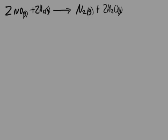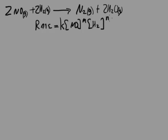Part A says to determine the order for each of the reactants, NO and H₂, from the data given and show your reasoning. I'm going to take two different approaches for the two different reactants, because one approach is much easier and simpler but doesn't always work, and the other approach will always work but is a little more difficult. The rate law is: rate = K times [NO]^M times [H₂]^N.